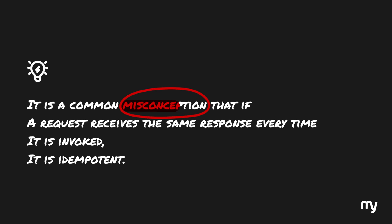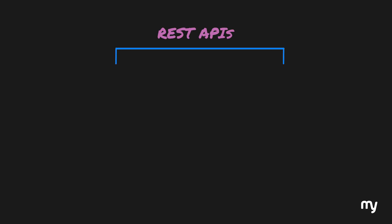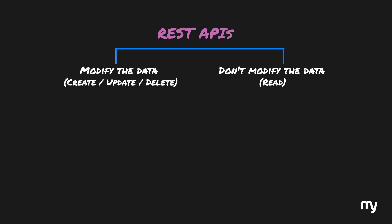We all use REST APIs and at some point we've heard about idempotency in relation to REST APIs. Based on the foundation we've established, let's find out how idempotency is achieved in REST. A common misconception is that if a request gets the same response every time it is invoked, the request is idempotent — this is completely incorrect. REST APIs usually do two things: either modify data through create, update, or delete operations, or they don't modify data, which is the read operation. The methods which don't modify data are GET, HEAD, OPTIONS, and TRACE. These are used to fetch data from the server without modifying anything, so all these methods are idempotent.